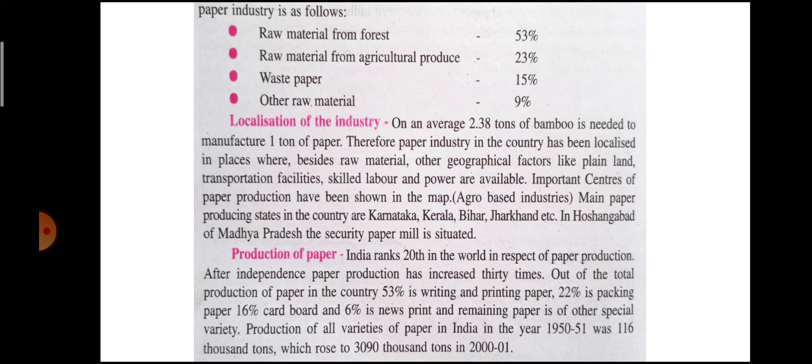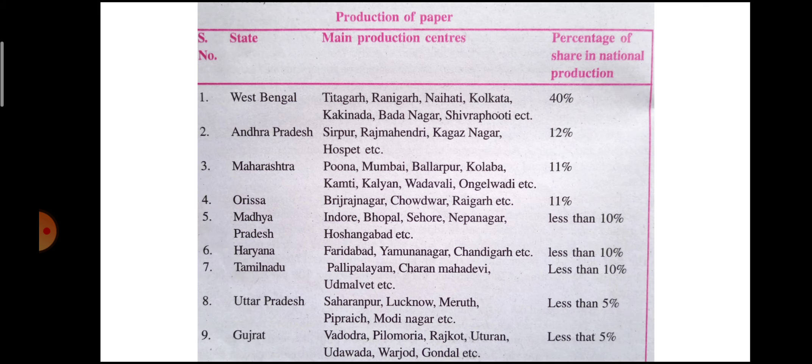Production of various varieties of paper in India in the year 1950-51 was 116,000 tons, which rose to 3,090,000 tons in 2001. Looking at state-wise production: West Bengal ranks first with 40% of total production. Its important centers include Titagarh, Raniganj, Naihati, Kolkata, Kakinada, Badnagar, and Shivrapur.